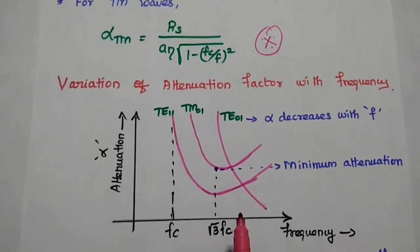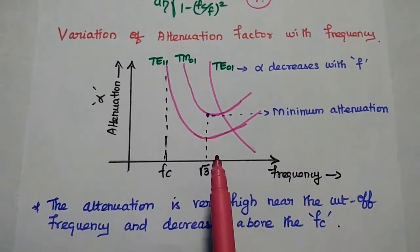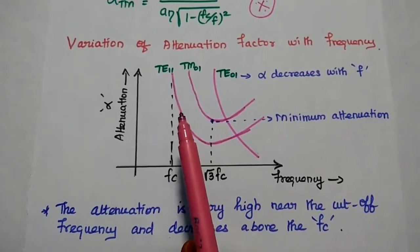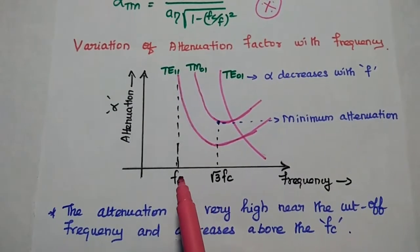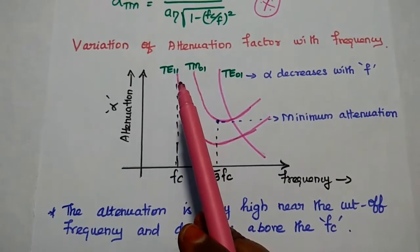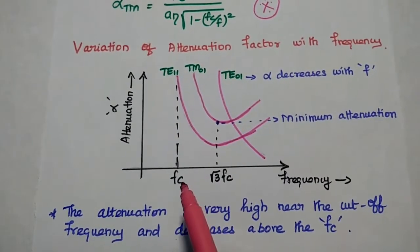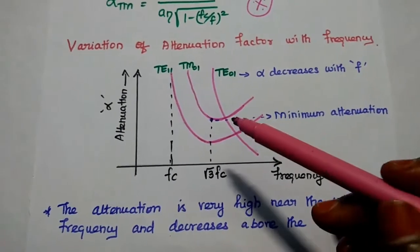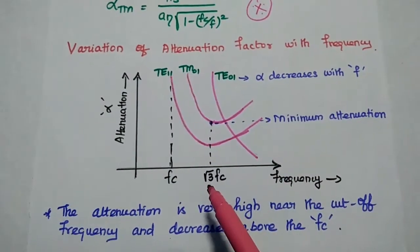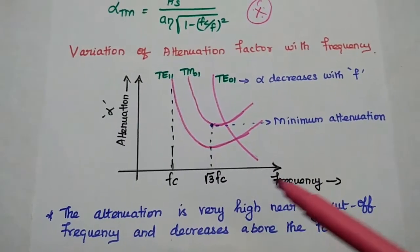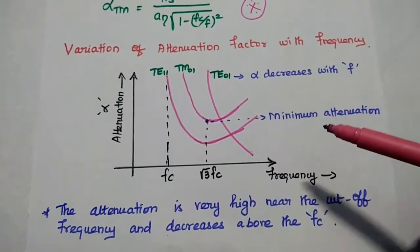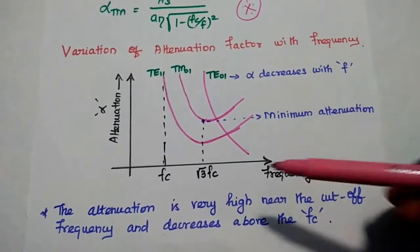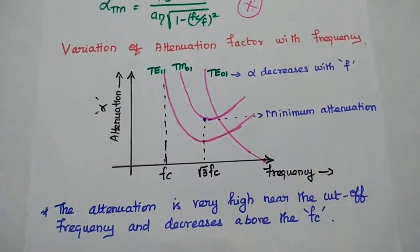Next, we are going to discuss the variation of attenuation factor as a function of frequency. This diagram relates the attenuation factor with frequency. The attenuation is very high at the cutoff frequency range — once the cutoff frequency is reached, its value is maximum. If the frequency is increased above the cutoff frequency, the attenuation value decreases for both TE and TM waves. Minimum attenuation occurs at square root of 3 times the cutoff frequency. If the frequency is increased further, attenuation increases again. The TE01 wave shows the behavior that the attenuation factor decreases with frequency until it reaches its minimum value.